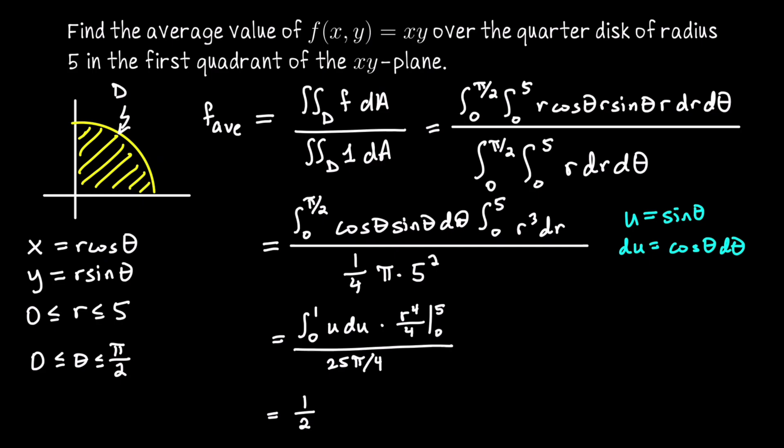So 1 half times, similarly, we'll write 5 to the fourth over 4. And then dividing by that fraction is like multiplying by its reciprocal. So I'll write times 4 over 25 pi. I'll write 5 squared pi, just so it's clear what the cancellation is. Cancel out the 4's, reduce this, and we're left with 25 over 2 pi.